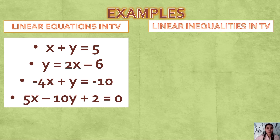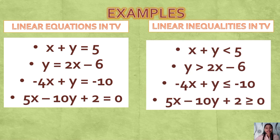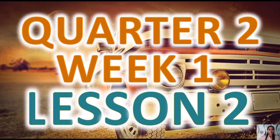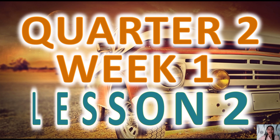In linear inequalities in two variables, we replace the equal sign with different inequality symbols. For example: X + Y < 5, Y > 2X − 6, −4X + Y ≤ −10, and 5X − 10Y + 2 ≥ 0. Now, moving to Quarter 2, Week 1, Lesson 2.